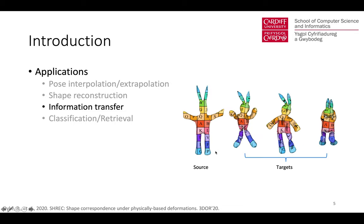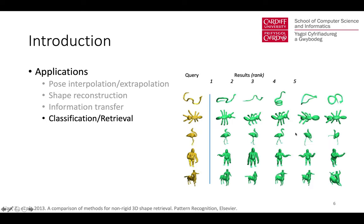For information transfer, we have a source shape and target shapes. Once we know the correspondence, we can transfer attributes such as texture from the source shape to the target shapes. For classification and retrieval of non-rigidly deformable shapes, we can use shape correspondence to factor out pose changes and then focus on the actual shape.